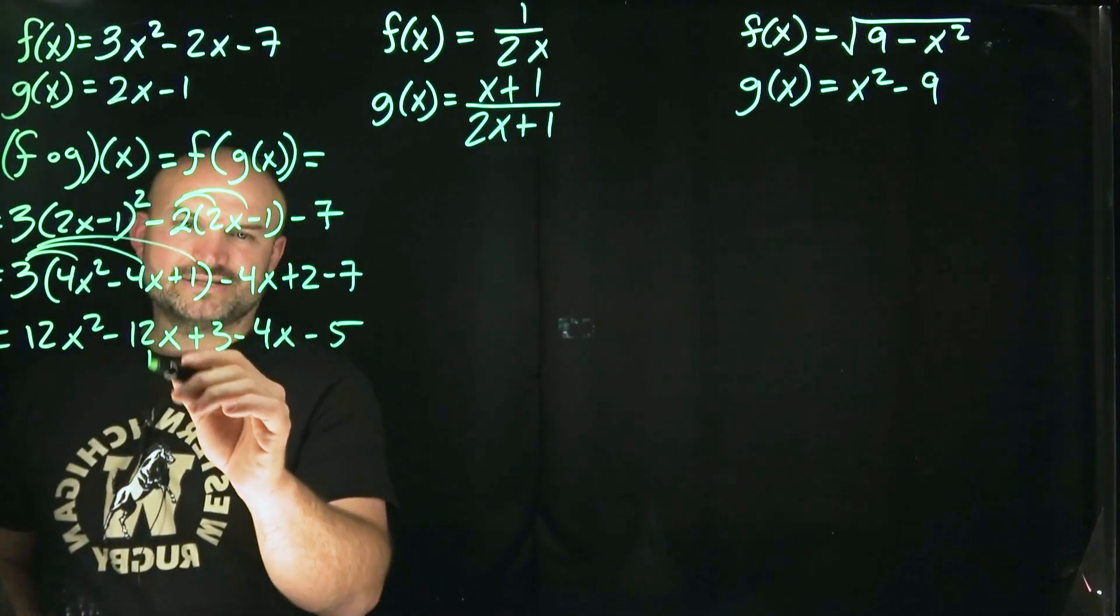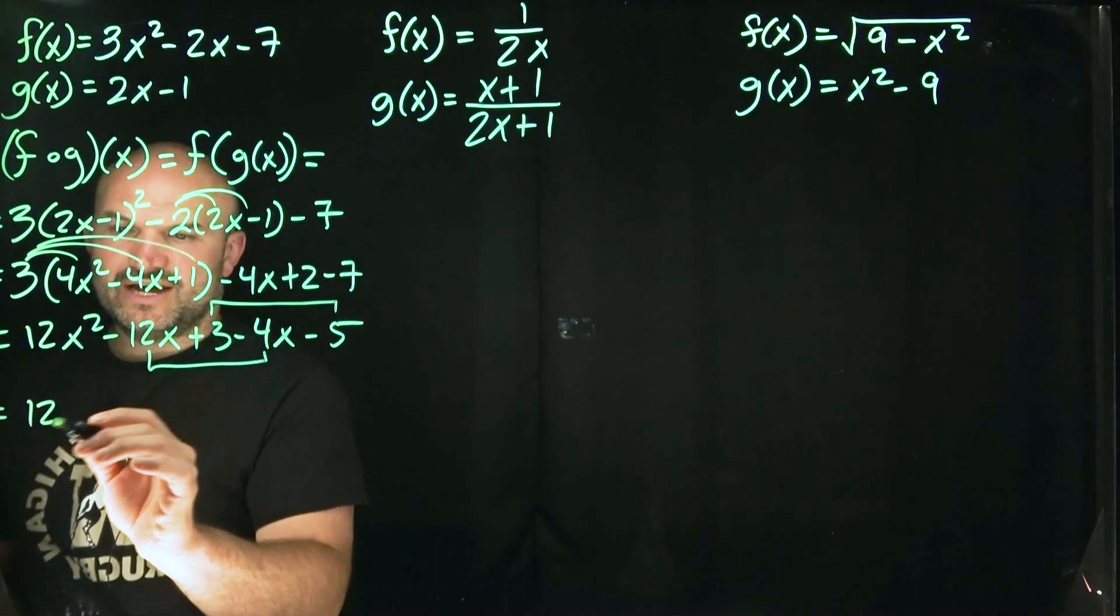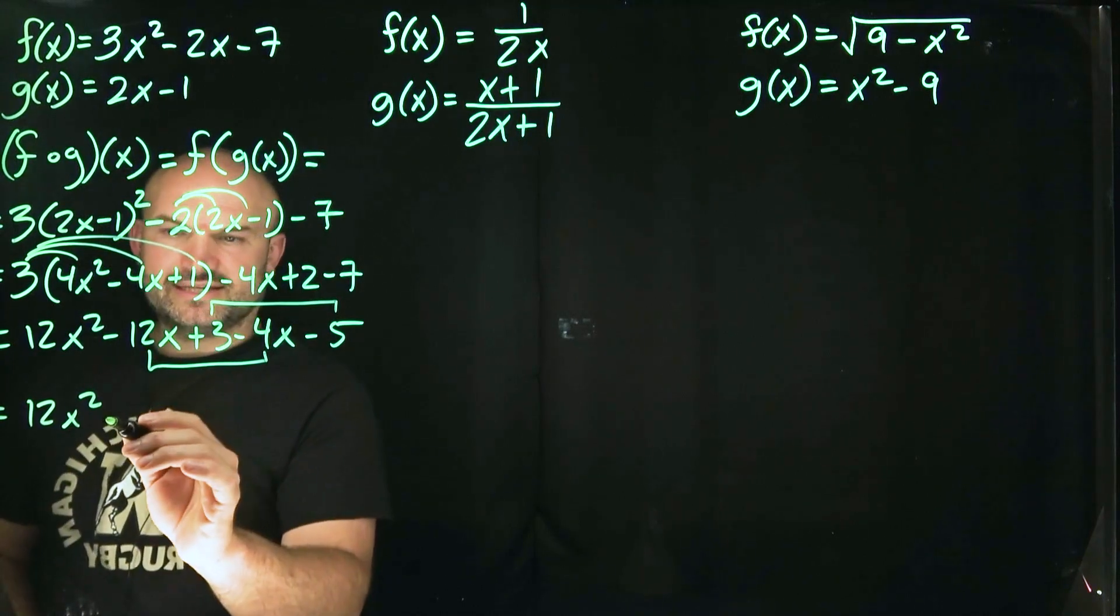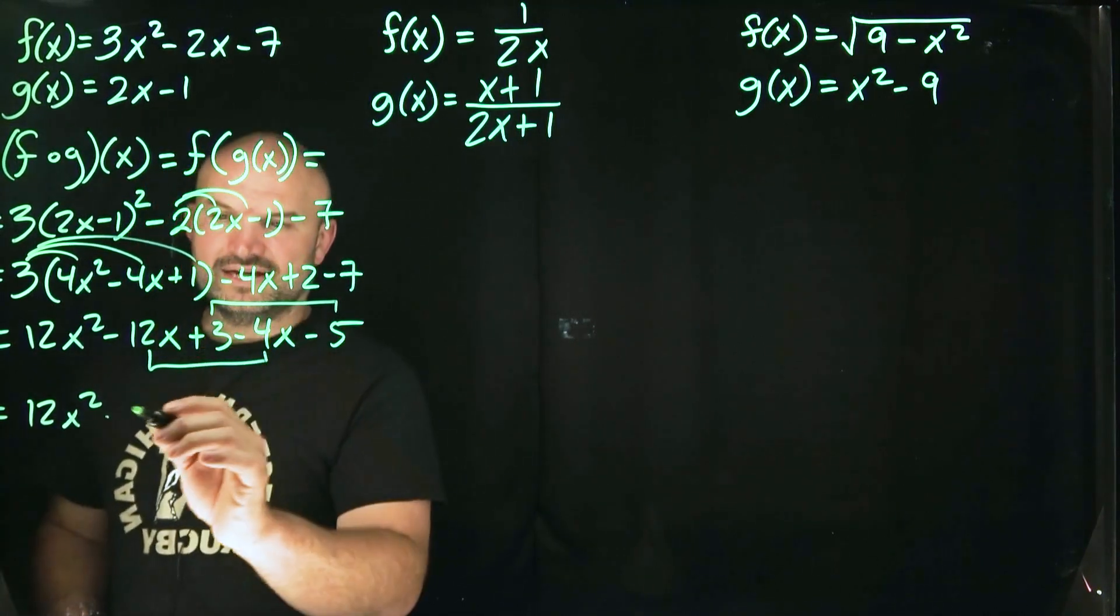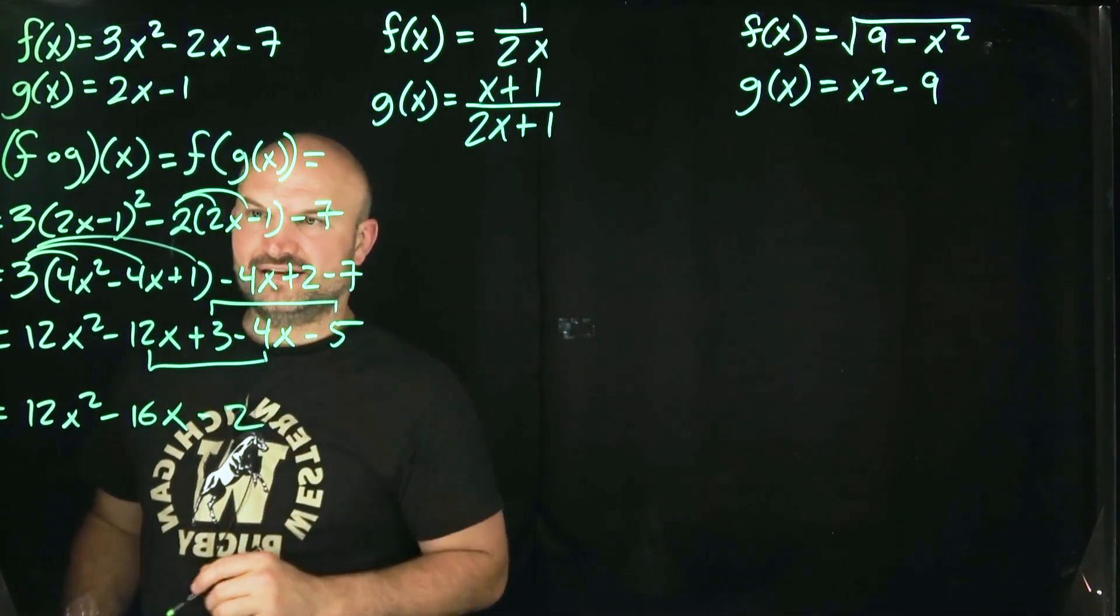All right, it really wasn't that bad. So now I can combine these two, because those both have x's, they're like terms, and I can combine these two. So therefore, I have a 12x squared. Let's see, that's going to be negative 12x minus 4x is a negative 16x. 3 minus 5 is going to be a negative 2.